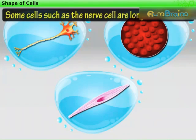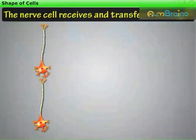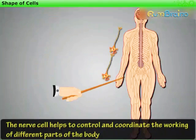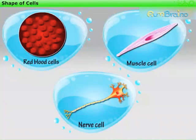While some cells, such as the nerve cell, are long and branched. The nerve cell receives and transfers messages. In this way, the nerve cell helps to control and coordinate the working of different parts of the body. Thus, the different shapes of cells are related to their specific functions.